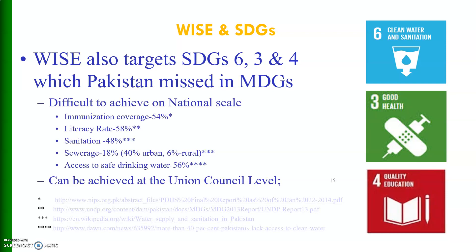WISE also targets Sustainable Development Goals number 6, 3 and 4 — which Pakistan missed in the Millennium Development Goals. These are difficult to achieve on a national scale and include: immunization coverage at 54%, literacy rate at 58%, sanitation at 48%, sewerage at 18% for urban and 6% for rural, and access to safe and clean drinking water at 56%. However, this can be achieved by the social mobilization model at the Union Council level.